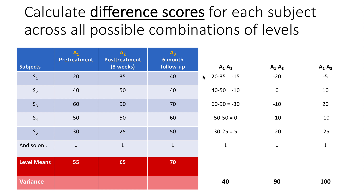There are three possible contrasts here because I have three levels. There's a contrast where I look at the difference in scores from A1 to A2 — pre-treatment to post-treatment within the same subject. Then A1 to A3, pre-treatment to six-month follow-up within the same subject. And then A2 to A3, post-treatment to six-month follow-up within the same subject. For subject one, 20 minus 35 is negative 15 — that's the A1, A2 contrast. For subject two, 40 minus 50 is negative 10. Then 60 minus 90 is negative 30, 50 minus 50 is zero, and 30 minus 25 is 5.